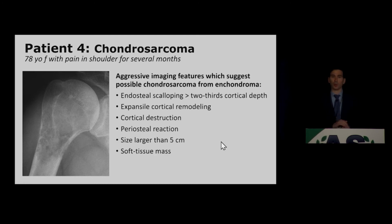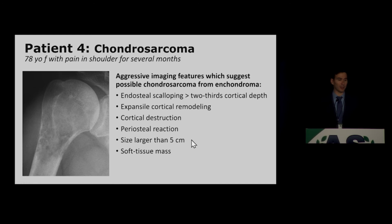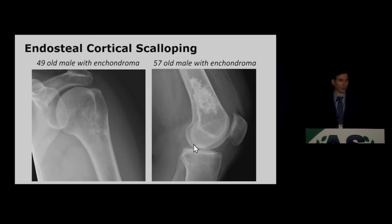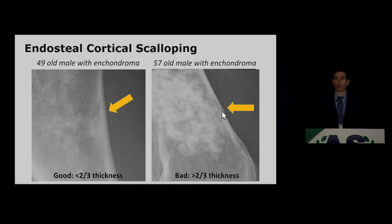A common question is differentiating enchondroma from low-grade chondrosarcoma. Key features: endosteal cortical scalloping greater than two-thirds cortical depth is a bad sign suggesting low-grade chondrosarcoma; expansile cortical remodeling, where the bone balloons out and the cortex thickens; overt bony destruction; and lesion size. For example, one lesion showing less than two-thirds scalloping is okay, while a lesion with deeper scalloping greater than two-thirds thickness was ultimately resected and confirmed as low-grade chondrosarcoma.